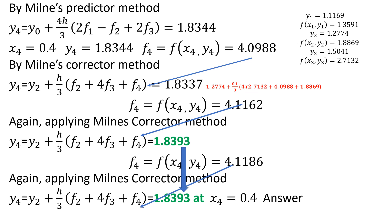We repeat this correction process until y4 converges. Initially y4 was not constant, then it became 1.8337, and after another iteration 1.8393. Applying the corrector once more with the updated f4, y4 again equals 1.8393 — it is now constant. So no further correction is needed: y4 = 1.8393 at x4 = 0.4.